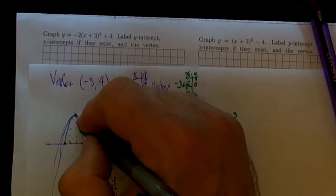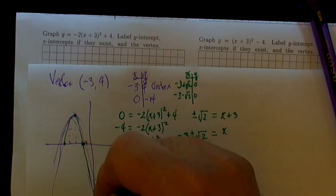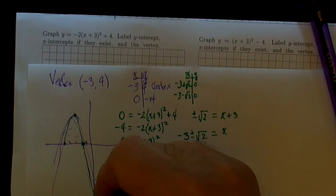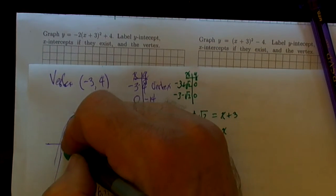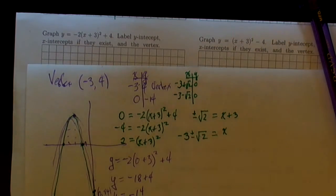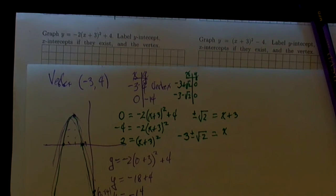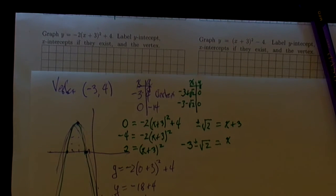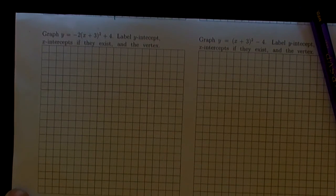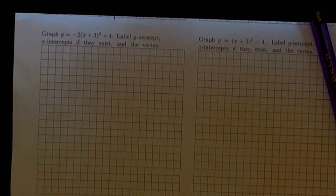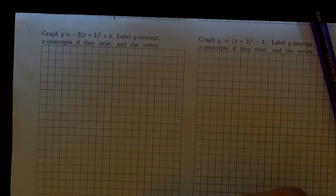Okay, so even when we roughed that picture out because we knew the y-intercept and the vertex, we were coming pretty close to where those intercepts were going to be. Now we've got to get all of that to fit nicely on this particular graph. We need to be able to get down to minus 14 and we need to be able to get up to 4.